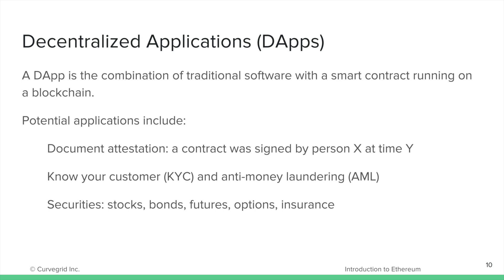Smart contracts by themselves are only accessible using specially constructed messages in the language of the blockchain. But you can combine smart contracts with traditional software like websites or desktop applications. These combinations of smart contracts with rich user interfaces are known as decentralized applications, or dApps.